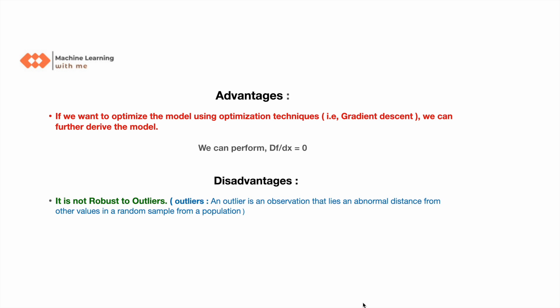Today we have successfully understood what mean squared error is, its advantages and disadvantages, and how to calculate it. I have already explained mean absolute error and R-squared in previous videos — the links are in the description. Please go check them out, and don't forget to subscribe, like, and share.